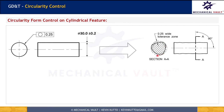Circularity is a form control and its tolerance zone is specified by two concentric circles within which each circular element of the surface should lie. This surface can vary at each cross-section within these two concentric tolerance zones, which are separated by the tolerance given in the feature control frame. Here, the circularity is controlled within 0.25, and that's why the radial distance between the two concentric circles is 0.25. The circularity call-out shall be specified on the surface and should not be associated or connected to the size dimension.